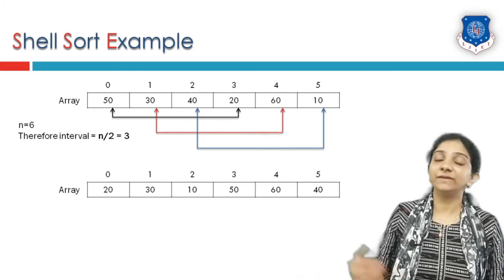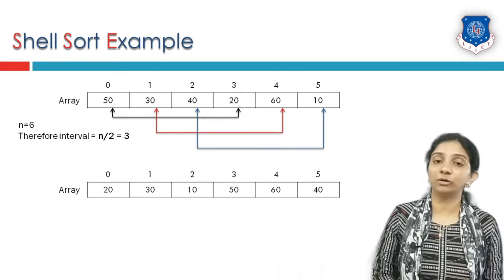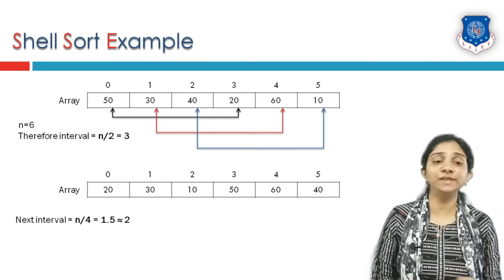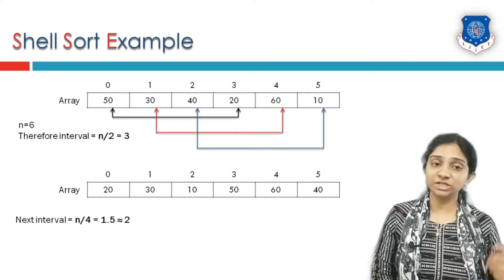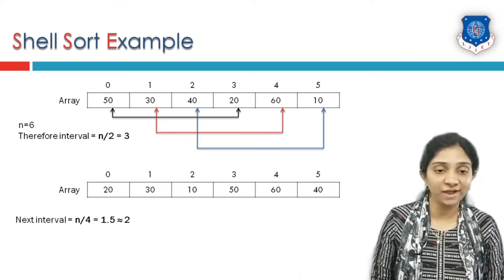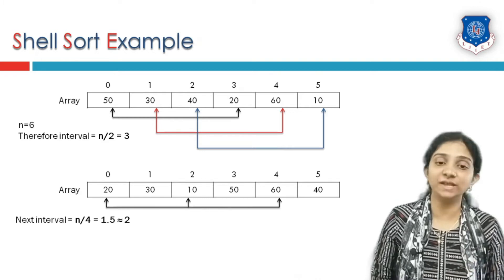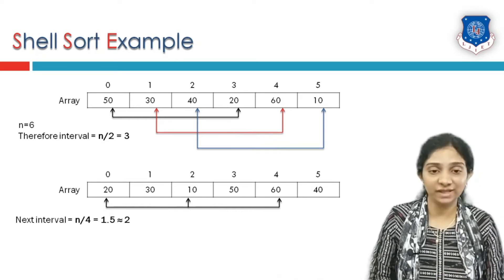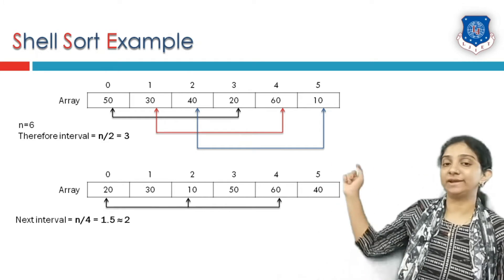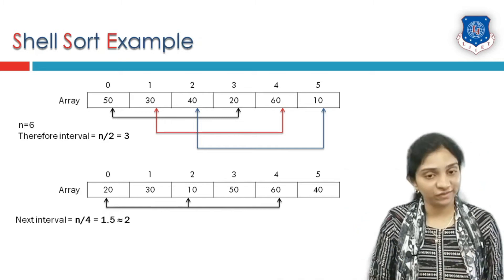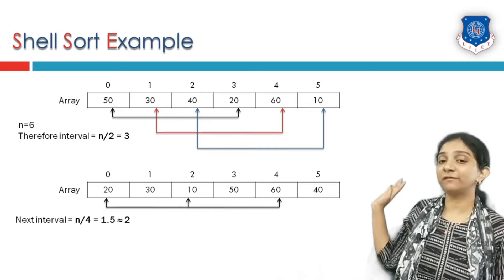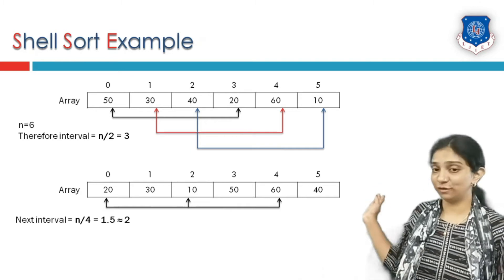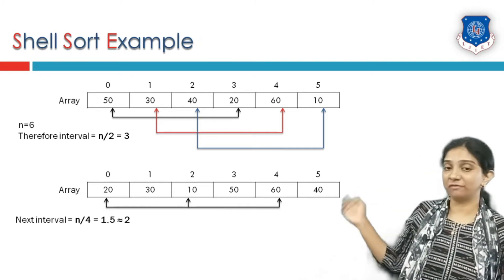This is the end of pass 1, where elements are sorted with an interval of n/2 using insertion sort. The next interval is decremented — the new interval will be n/4. Since n is 6, n/4 equals 1.5, which is approximated to the ceiling value of 2. Now all elements that are 2 positions apart will be part of one sub-list. Elements at index 0, 2, and 4 form the first sub-list — if there were an element at index 6 it would also be included, but we only have 3 elements in this sub-list.